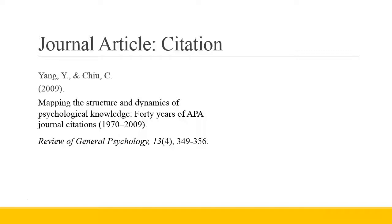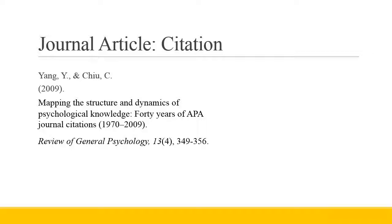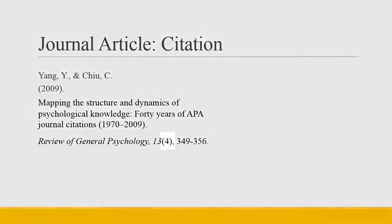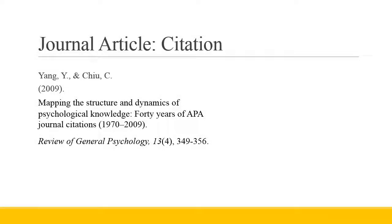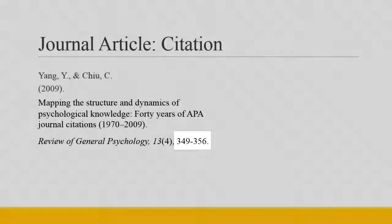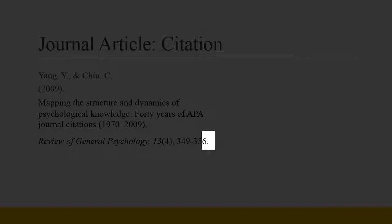Number four, there should be no space between the volume number and issue number. Number five, make sure that the volume number is italicized. Number six, make sure that the issue number is enclosed in parentheses. Number seven, after the issue number, you should add a comma. List the page numbers on which the article appears in the journal by putting in the first number dash last number. If the article has no page numbers because it was only released electronically, then omit the page numbers. Number nine, end the information about the journal with a period after the last page number.